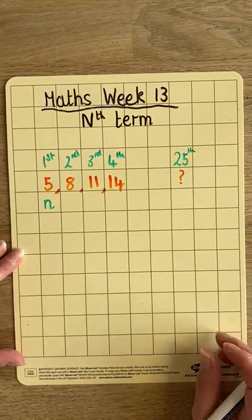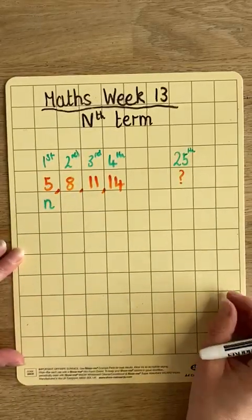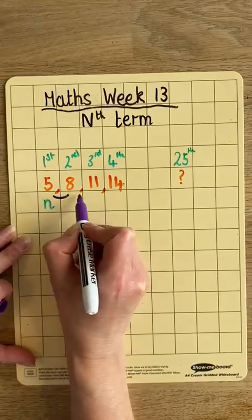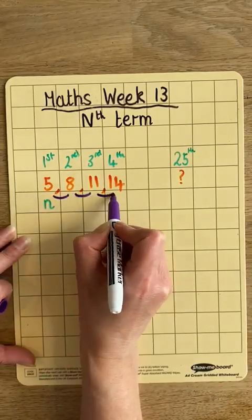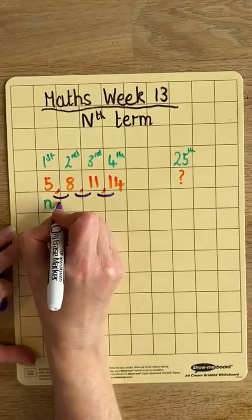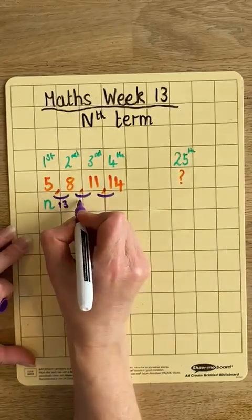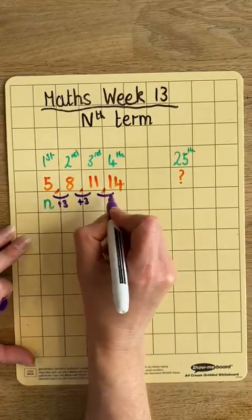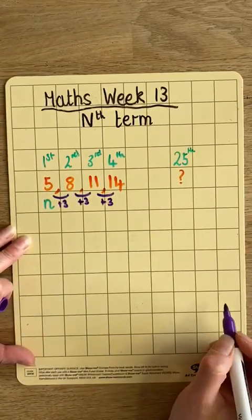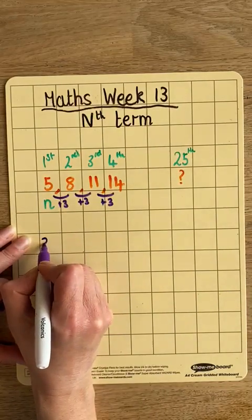So the first step to doing that is it's a good idea to write this out as a sequence and then work with it. Then we need to find the pattern that links the numbers, the difference between the numbers. So from 5 to 8, we're adding 3. 8 to 11, we're adding 3. And 11 to 14, we add 3. So because my difference is add 3, I'm going to call my pattern so far 3n.